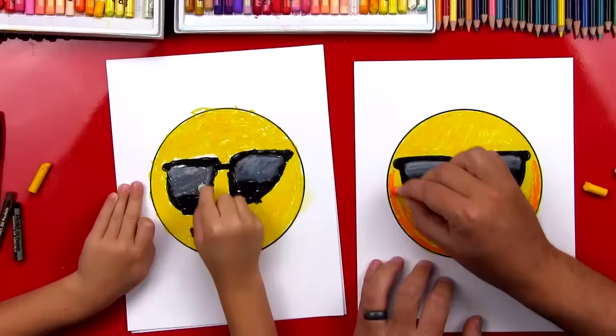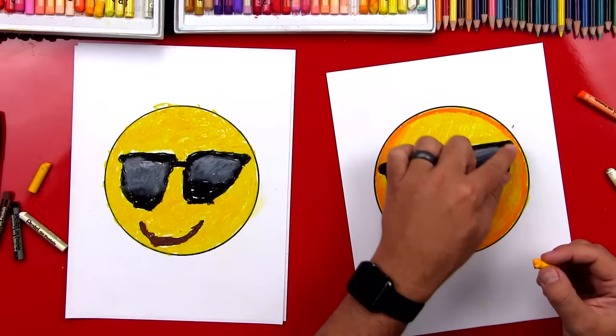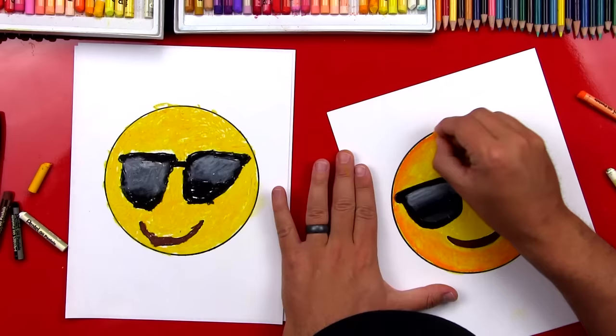Now we're using oil pastels, and they're a lot of fun to use because you can blend with them. We used white to go over our sunglasses to make a little reflection in there. And I also used orange, a darker orange, to go around the outside. And then I'm using the same yellow that I first used to blend it and make it look really smooth.